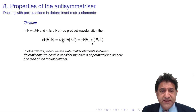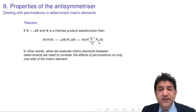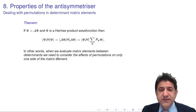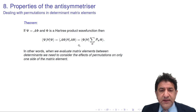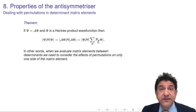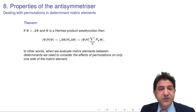We can essentially get rid of one of the anti-symmetrizers on the left-hand side, leaving the anti-symmetrizer only on the right-hand side, except for a missing factor. In other words, when we evaluate matrix elements between determinants, we only need to consider the effects of the permutations on one side of the matrix element — in this case, the right-hand side. You can probably guess it's because A squared equals A, which we proved in the last lecture. And you would be right.